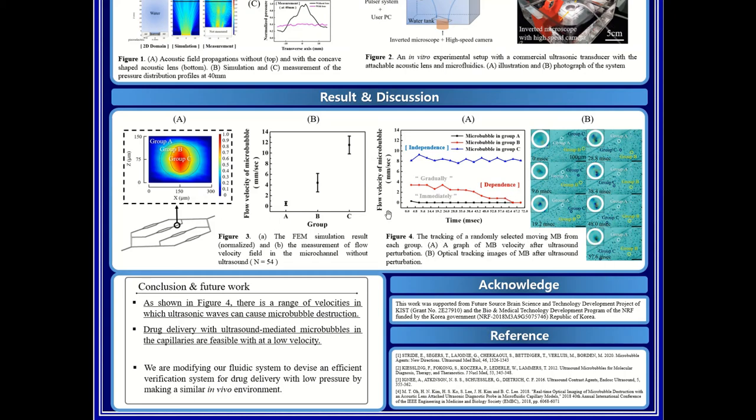As you see in groups A and B, it is easier for microbubble destruction to occur at lower flow velocity, because microbubbles are easier to destroy in areas of low flow velocity, such as capillaries,